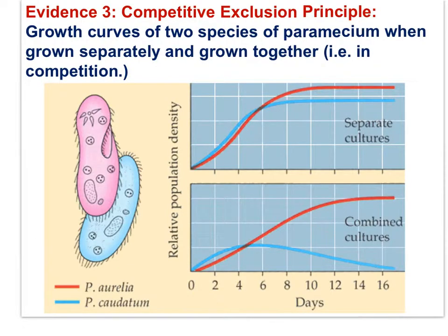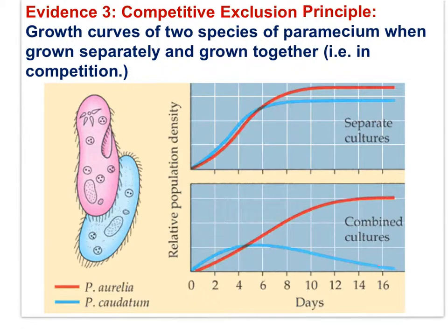In a classic example of competitive exclusion, two paramecium species are considered. When grown separately, Paramecium caudatum and Paramecium aurelia display classic S-shaped growth curves, with populations reaching steady-state equilibrium around carrying capacity. But when grown together, Paramecium caudatum numbers decline after day four, while aurelia numbers climb to carrying capacity — demonstrating that two species cannot occupy the same niche for an extended period of time.